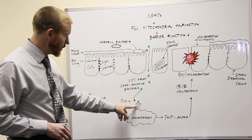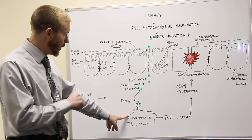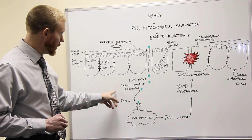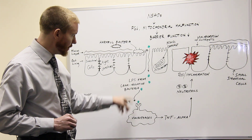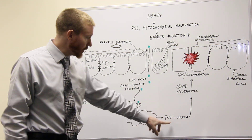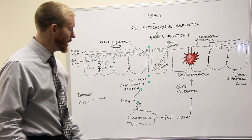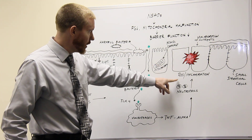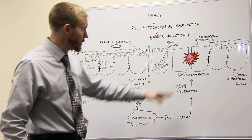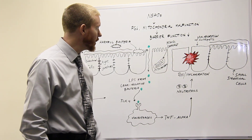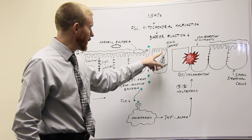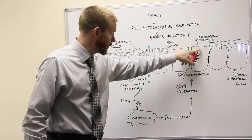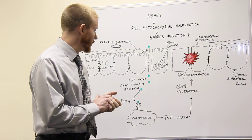LPS now interacts with cells of the immune system. Once the cells of the immune system are stimulated by the bacterial toxin — especially LPS from gram-negative bacteria — the immune system cells will increase their production of TNF-alpha. TNF-alpha draws in more cells of the immune system called neutrophils, which secrete reactive oxygen species and cause more inflammation and damage to the cells of the gut lining. We also get malabsorption because of damage to the microvilli — the part of the intestinal cells that absorbs nutrients. Once those are damaged and blunted, we get malabsorption of nutrients.